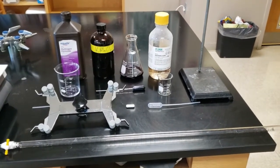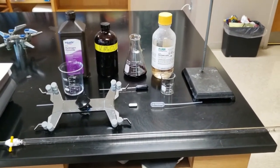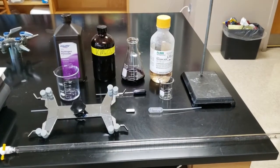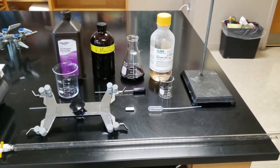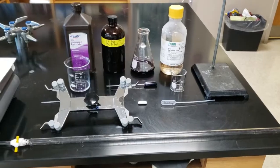Today we're doing a titration of 3% hydrogen peroxide with potassium permanganate. We're going to determine whether the 3% is an accurate measurement.